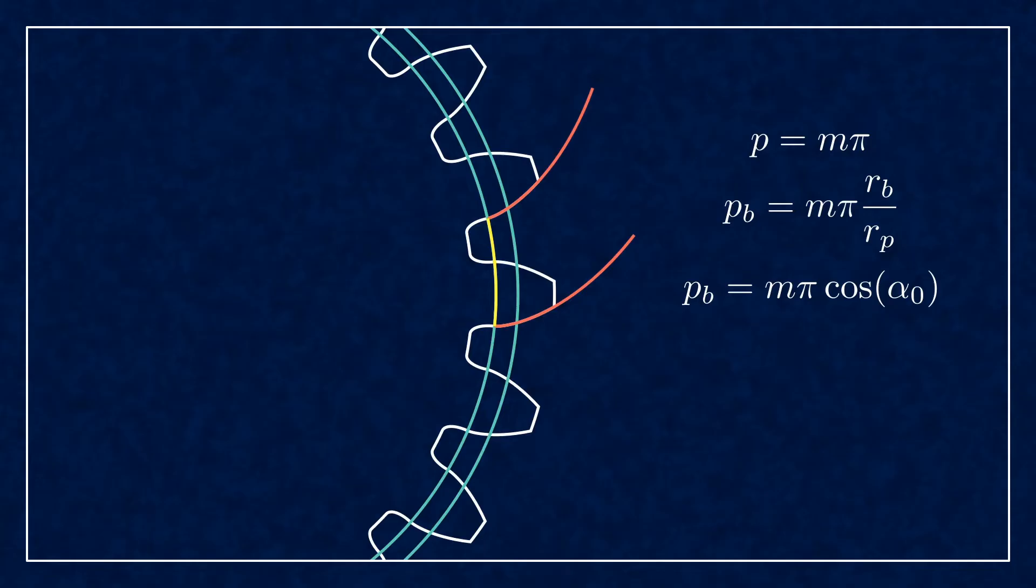This will be a similar arc, albeit on a smaller radius. So the length of the arc is proportional to the ratio of the radii, in this case the base radius to pitch radius. This is where you get the base pitch, it's the arc length between base points.